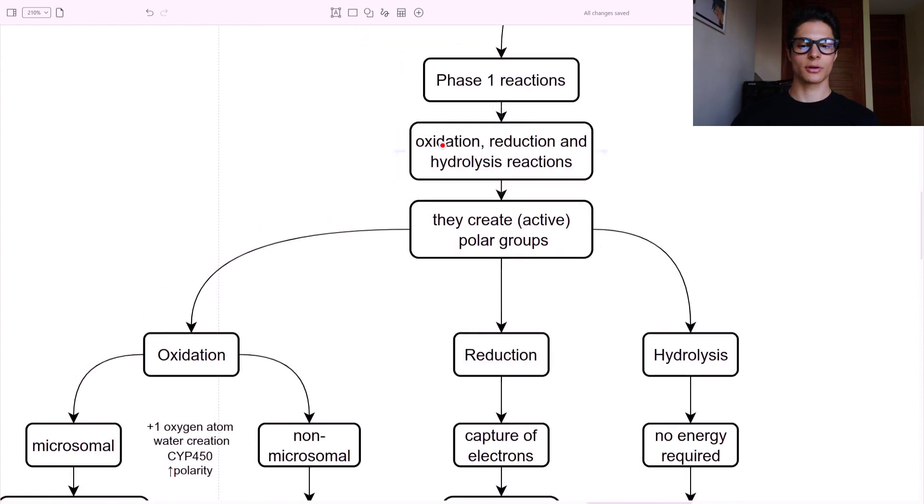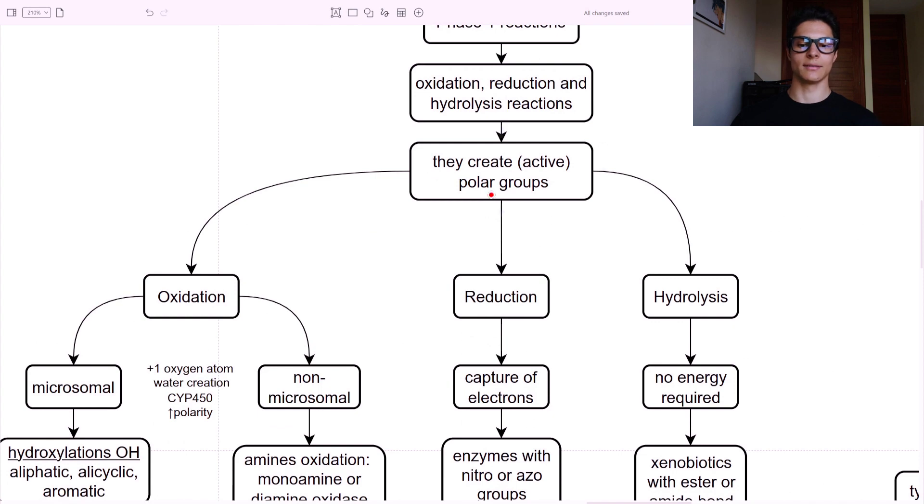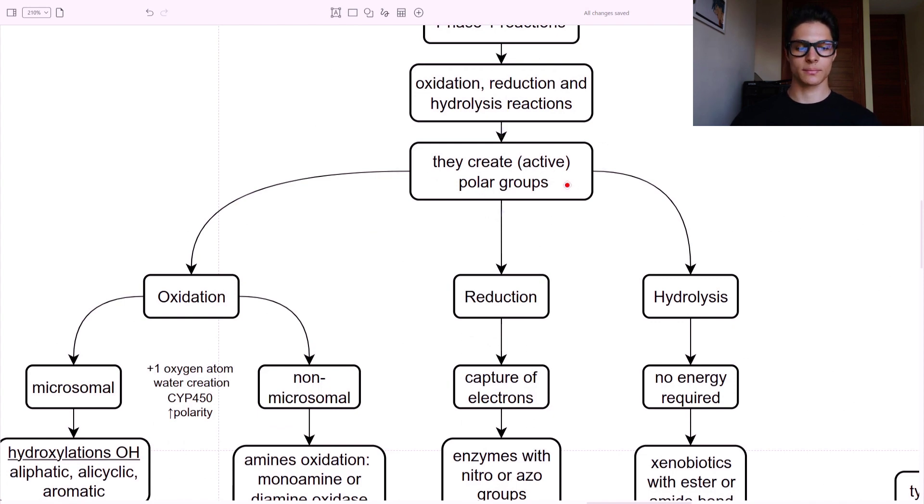Phase one reactions - oxidation, reduction, and hydrolysis. These three main reactions. They create active or non-active, but potentially active, polar groups. Oxidation - the goal here is to add one oxygen atom and to create water, using the cytochrome P450 and therefore increasing their polarity.